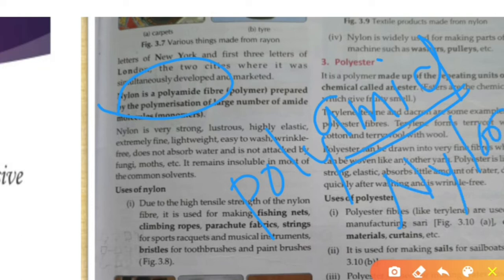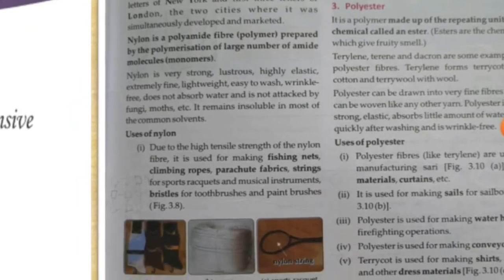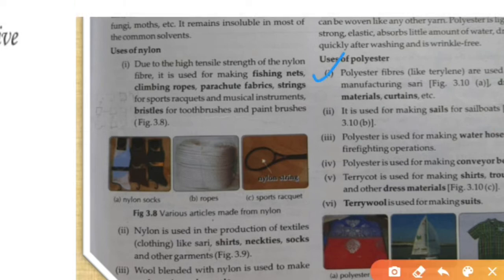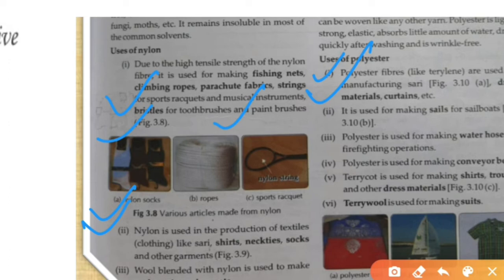Nylon is very strong and lustrous. It does not absorb water, which is why it is used as fishing nets. It is also used as climbing rope, parachute fabric, raincoats, strings, and bristles. Nylon socks use it because it is elastic. The rope and nylon strings used in badminton rackets are also made from nylon.